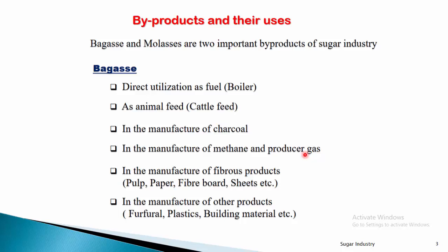Bagasse is the waste material extracted during the juice extraction step. Once the juice is extracted, the unwanted fibrous cover of the sugar cane is removed as a waste material known as bagasse. Being a dry material, it is directly used as fuel — for example, as fuel in a boiler. In sugar industry concentration processes, thermal energy is required, and bagasse serves this purpose.